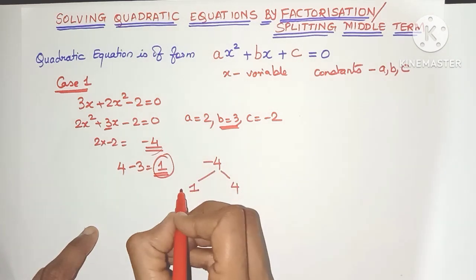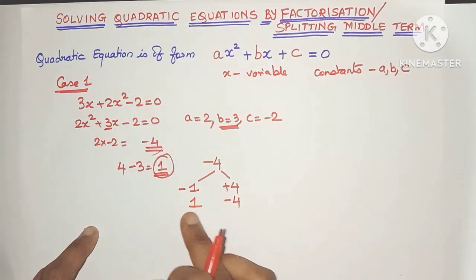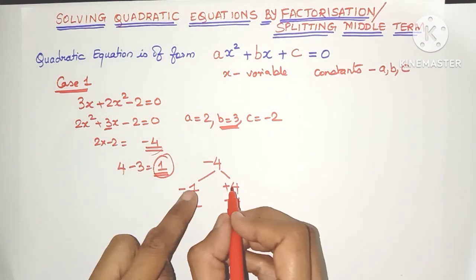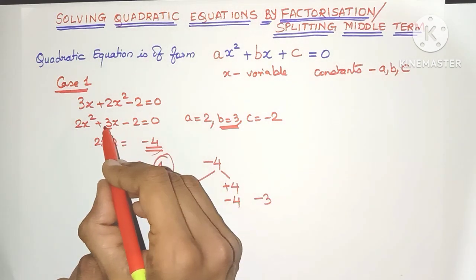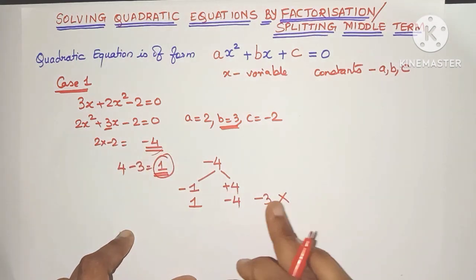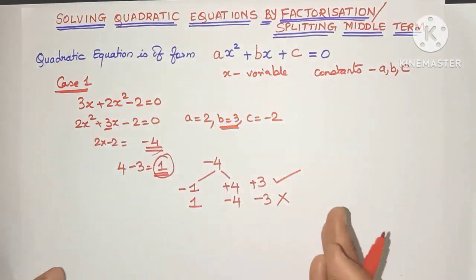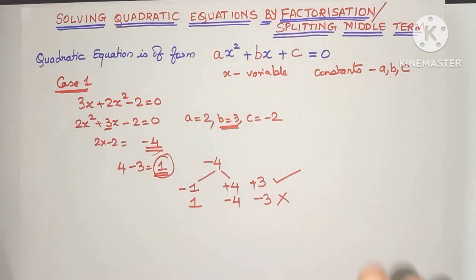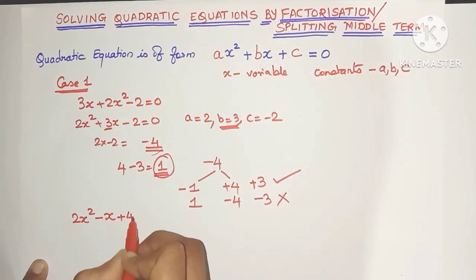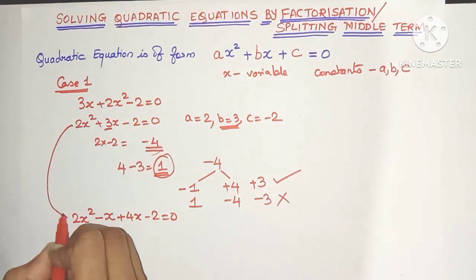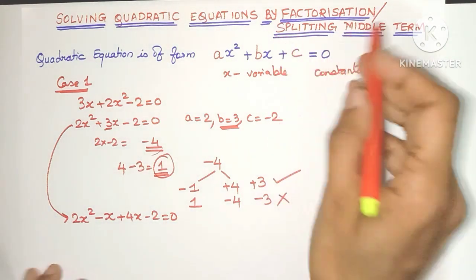Because it's minus 4, we write minus 1 and plus 4, or plus 1 and minus 4. Adding 1 minus 4 gives minus 3, which is not what we need — we need plus 3. So that combination won't work. Trying minus 1 plus 4 gives plus 3, which is what we need. We now write the middle term split as minus x plus 4x. Because we are breaking the middle term into two terms, this is also known as the splitting of the middle term method.